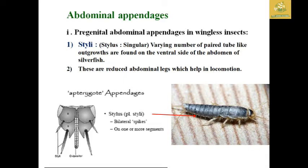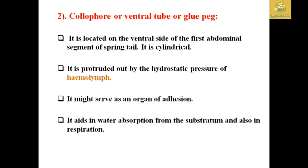These reduced legs are known as styli and are also described as bilateral spikes used for locomotion in silverfish. The second appendage is the colophore or ventral tube, also known as the glupeg. It is located on the ventral side of the first abdominal segment of springtails. It is cylindrical in shape and is protruded by the hydrostatic pressure of hemolymph. It may serve as an organ of adhesion, aids in water absorption from the substratum, and assists in respiration.